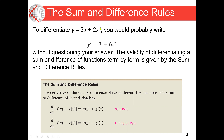Next, for the term with exponent 3, we compute 3 times 2, giving a new coefficient of 6. We subtract 1 from 3, so the derivative of 2x cubed is 6x squared. Here we are using the power rule, which was covered in our previous lectures.